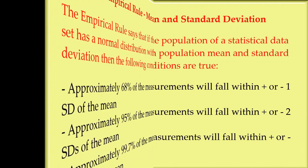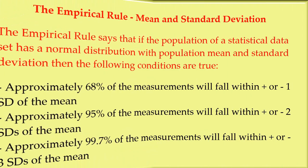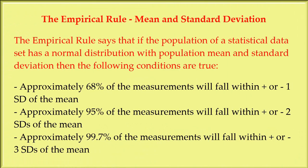The empirical rule says that if the population of a statistical data set has a normal distribution with population mean and standard deviation, then the following conditions are true.